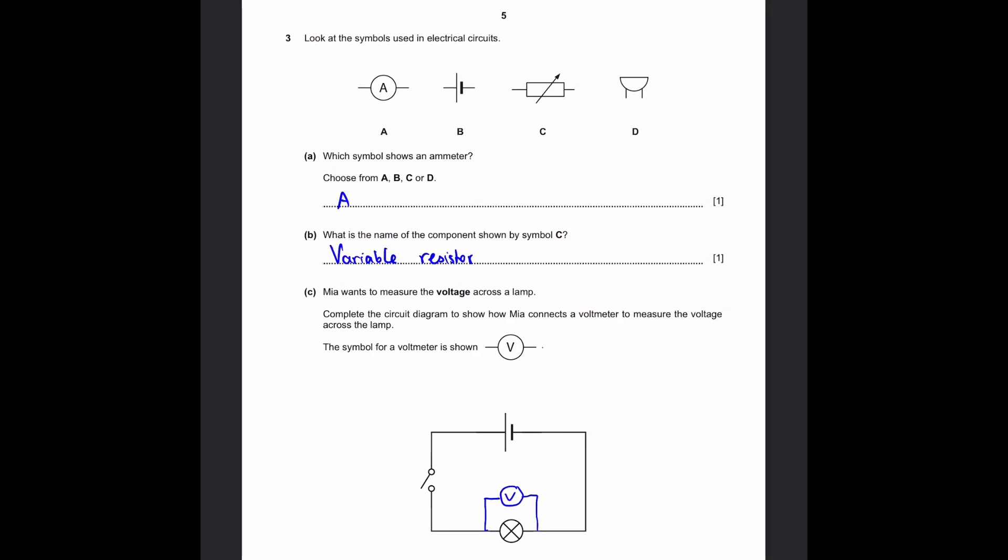Question 3. Look at the symbols used in electrical circuits. Part A: Which one shows an ammeter? Choose from A, B, C, or D. The answer is simply A. An ammeter is a circle which has an A on it and it connects to two sides of the electrical wire. Part B: What is the name of the component shown by symbol C? If we had just a rectangle, we know that this is a resistor. But since there's an arrow drawn on it, now you have to add variable to this.